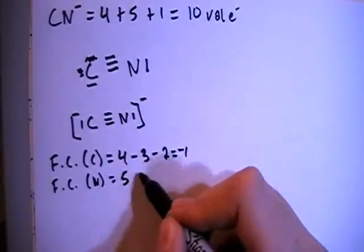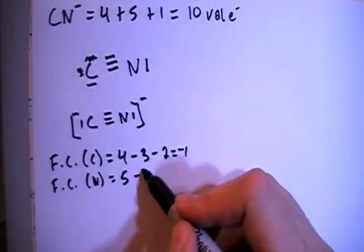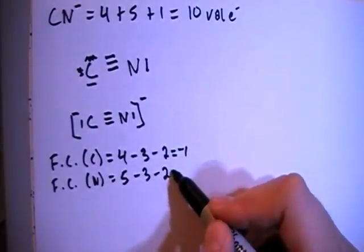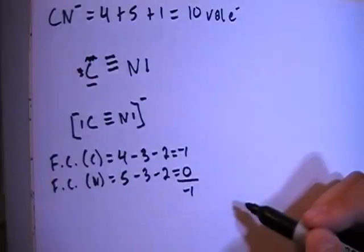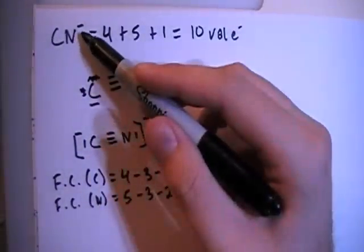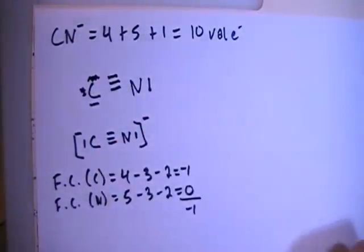And the formal charge of the nitrogen equals five valence brought in minus one, two, three bonds minus two non-bonding, gives you a formal charge of zero. Sums up to minus one overall formal charge, which is what we're looking for, because it's a negative one charged ion.